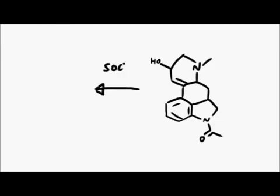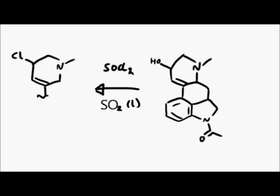Thionyl chloride was used to convert the alcohol into a chloride, and the mechanism is pretty similar to the one you saw previously.